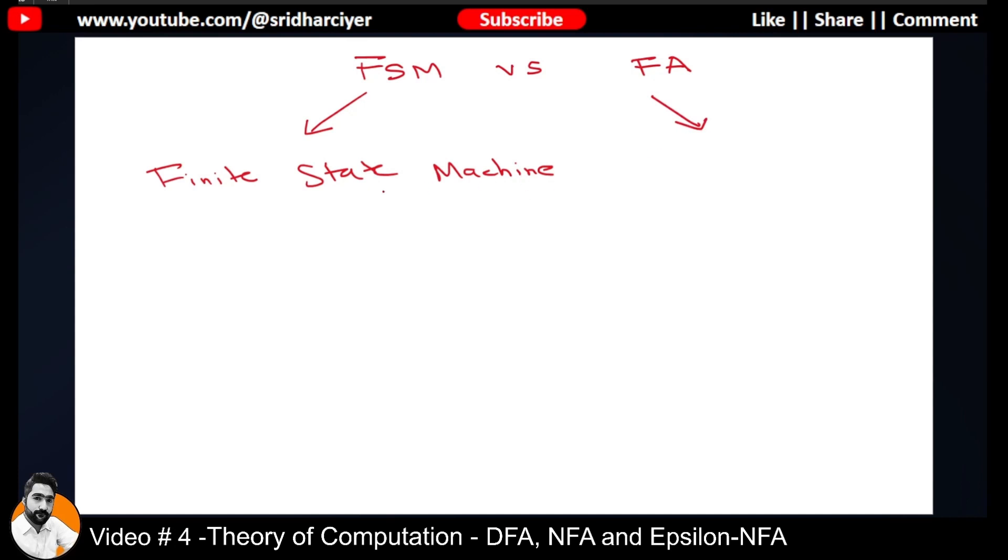We have already discussed in the past that FSM consists of three tuples: I, O, and S. Whereas if I talk about FA, it consists of five tuples which are nothing but inputs or the alphabets, then the set of states Q, then the initial state QS or Q0, then comes the final state F, and finally the transitions depicted by this delta symbol.